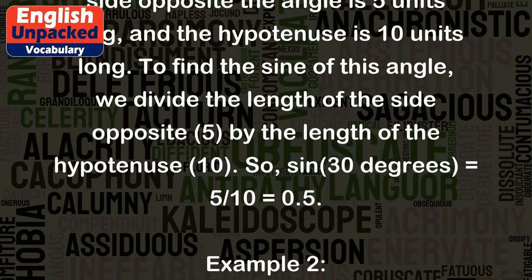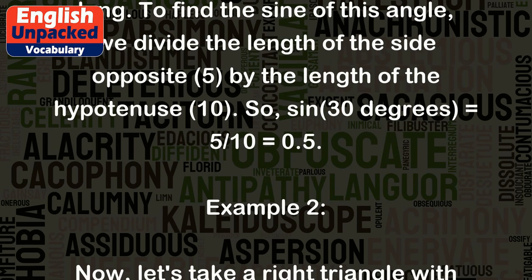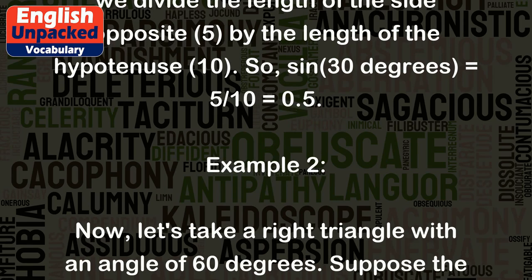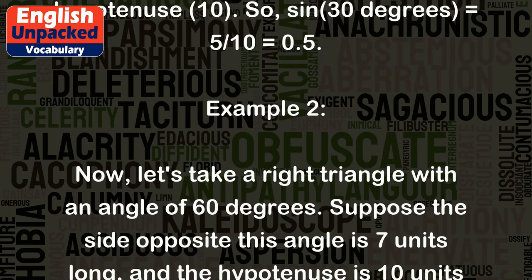Example 2: Now, let's take a right triangle with an angle of 60 degrees. Suppose the side opposite this angle is 7 units long, and the hypotenuse is 10 units long.